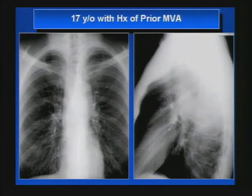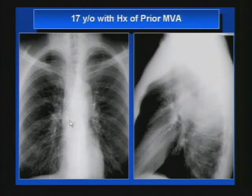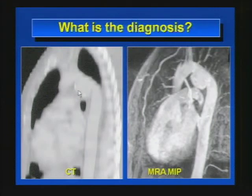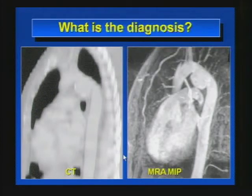Next patient: 17-year-old with prior motor vehicle accident. We can see enlargement of the left upper superior mediastinum at the region of the aortic arch, also visible on the lateral film. The sagittal reconstruction of CT demonstrates dilatation in the inferior aspect of the ductal region with a little calcification, and MRA shows the same finding. This is a typical location for a traumatic pseudo-aneurysm. The locations where the aorta is usually injured during trauma are the aortic isthmus, the ductal region, and the diaphragmatic hiatus.